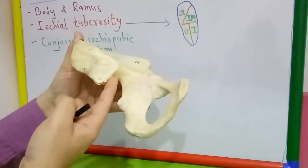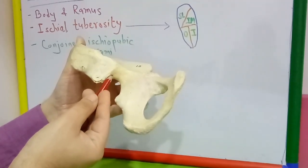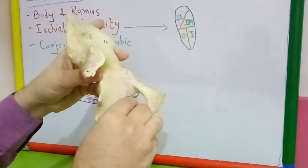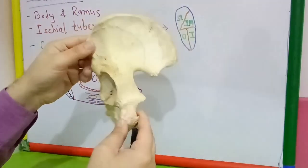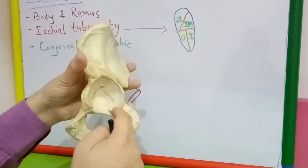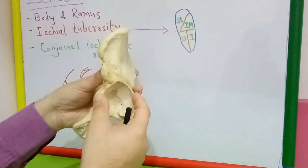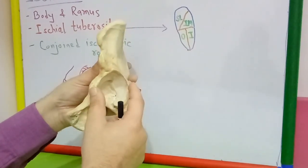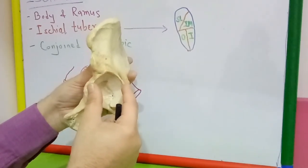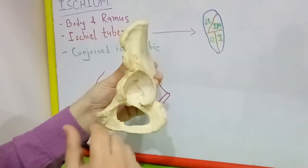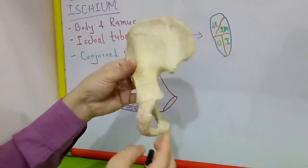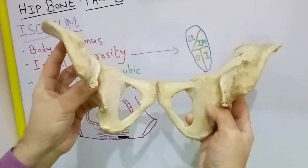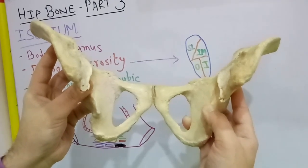Along the upper margin of the greater sciatic notch there is the preauricular sulcus, which is deeper and more marked in females. The obturator foramen is large and oval in males, small and triangular in females. The acetabulum is large in males and its diameter is approximately equal to the distance from its anterior margin to the pubic symphysis; if the diameter is less than that distance, it is a female hip bone. The sub-pubic angle formed by the two conjoint ischiopubic rami is wider in females — about 80 to 85 degrees — and less in males.